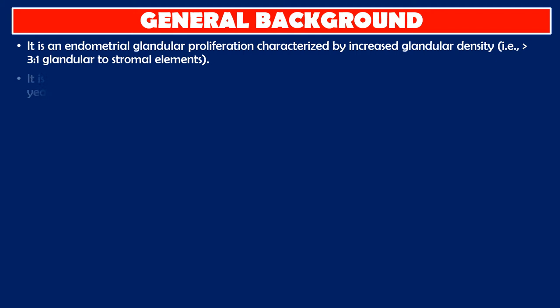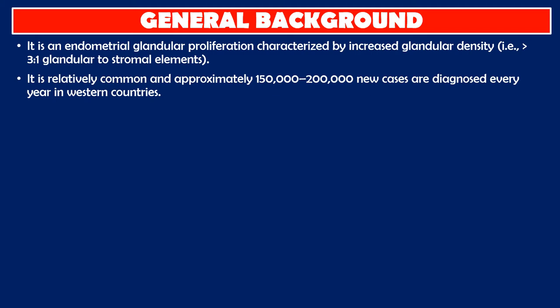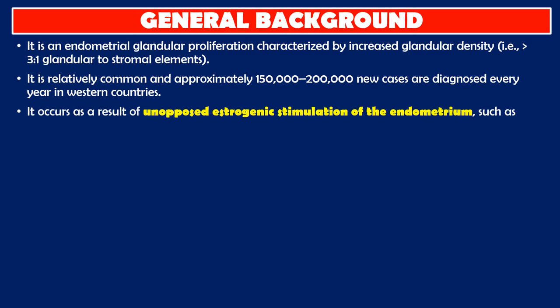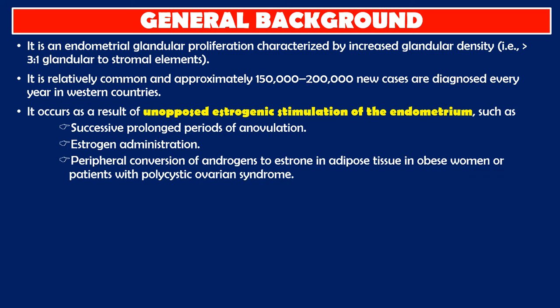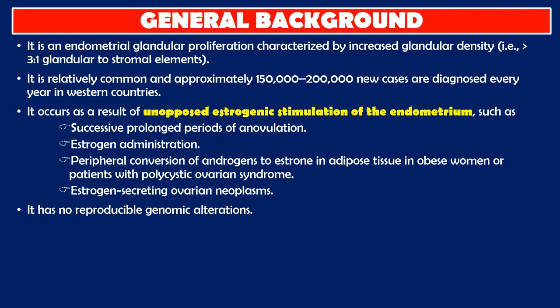It is relatively common, with approximately 150,000 to 200,000 new cases diagnosed every year in western countries. It occurs as a result of unopposed estrogenic stimulation of the endometrium, such as successive prolonged periods of anovulation, estrogen administration, peripheral conversion of androgen to estrone in adipose tissue in obese women or patients with polycystic ovarian syndrome, and estrogen-secreting ovarian neoplasms. It has no reproducible genomic alterations.